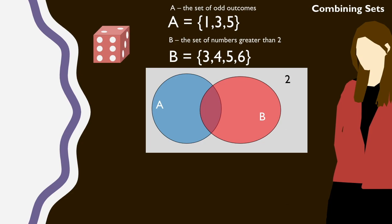The intersection of these two sets, or the overlap of these two sets, is the set of numbers that are odd and greater than 2. So these are 3 and 5, and we can write A and B equals the set 3 and 5.